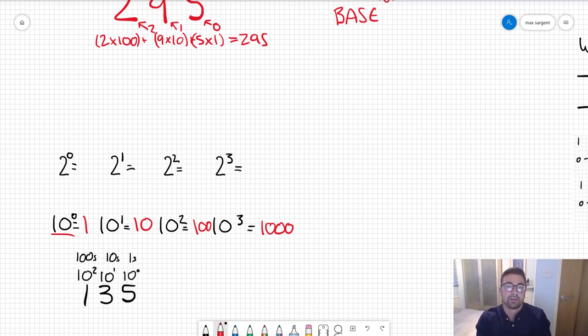We can apply this understanding of how we work out the place values for the base 10 number system to binary to just instantly understand how binary works. Again, 2 to the 0 that's going to be 1, 2 to the 1 is 2, 2 to the 2 is 4, 2 to the 3 is 8. So in binary, instead of having ones, tens, hundreds, thousands, you have ones, 2s, 4s, 8s, 16s, 32s, and so on.